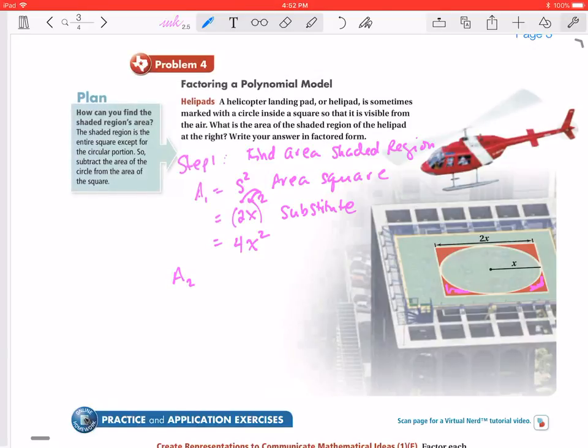Now we're going to take our area of the circle. So area of the circle is pi R squared. Now here our radius, our R is X, so I'm going to substitute. Let me write area of a circle. Now we're going to substitute. So this is going to give me pi X squared.